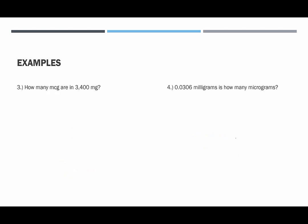For these last two examples, pause the video, try them on your own, see how you do. For the third example, how many micrograms are in 3,400 milligrams? So this is 3,400 times 1,000, so we're taking the decimal point, and we are moving it three places to the right, that would be 1, 2, 3, filling in the gaps with three zeros, and we end up with 3,400,000 micrograms.